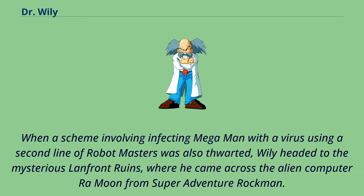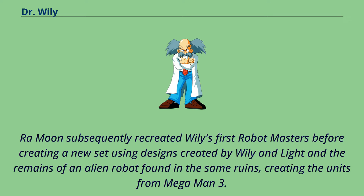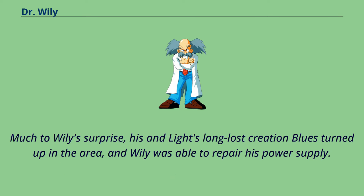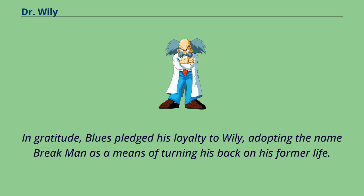When a scheme involving infecting Mega Man with a virus using a second line of Robot Masters was also thwarted, Wily headed to the mysterious Lanfront ruins, where he came across the alien computer Ra Moon from Super Adventure Rockman. Ra Moon subsequently recreated Wily's first Robot Masters before creating a new set using designs created by Wily and Light and the remains of an alien robot found in the same ruins, creating the units from Mega Man 3. Much to Wily's surprise, his and Light's long-lost creation Blues turned up in the area, and Wily was able to repair his power supply. In gratitude, Blues pledged his loyalty to Wily, adopting the name Break Man as a means of turning his back on his former life.